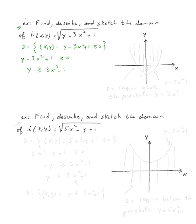Graphing y = 3x² - 1, the parabola has vertex at (0, -1) and opens upward. We want all points such that y is bigger, in other words above the curve. The domain is the region above the parabola y = 3x² - 1.